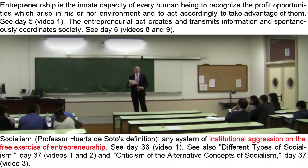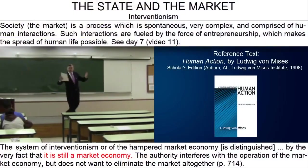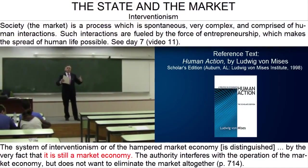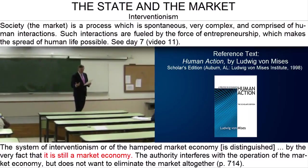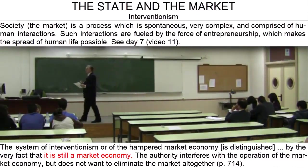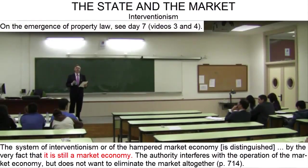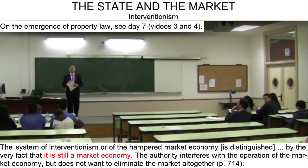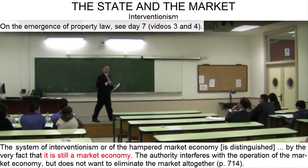According to Mises, interventionism is characterized by the existence of a market. Voluntary exchanges are possible within a relatively large sphere. There are entrepreneurs — we are able to exercise entrepreneurship to a certain extent, though with varying degrees of liberty. There is private property; we can own our apartments and our cars, and the sphere of private property is relatively large.